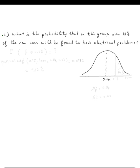What is the probability that in this group over 18 percent of the new cars will be found to have electrical problems? Over, so basically we need to find the probability of p hat bigger or equal than 0.18, or strictly bigger, it doesn't matter. So this is what we're looking for. So this is 0.18. So we're looking for this area.